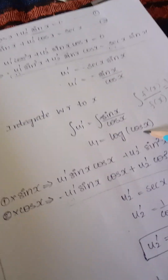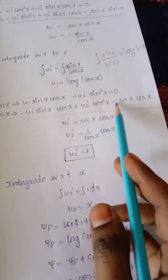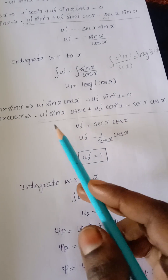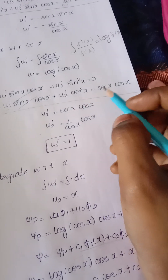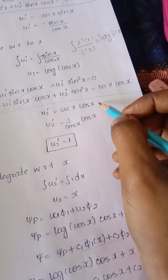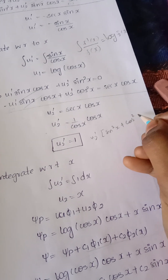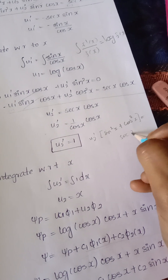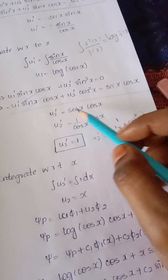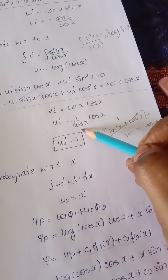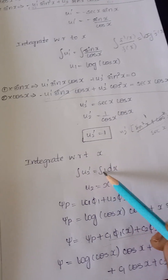Similarly, multiplying the first equation by sin(x) and the second by cos(x), then adding, cancels the u₁' terms. We get u₂'(sin²x + cos²x) = sec(x)·cos(x). Since sin²x + cos²x = 1 and sec(x)·cos(x) = 1, we have u₂' = 1.